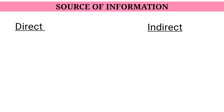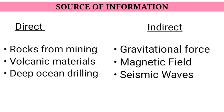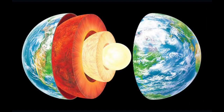Direct sources include studying rocks from mining, studying volcanic materials, and deep ocean drilling, which give us some information. Indirect sources include gravitational force, magnetic field, and seismic waves. Most of the information with regard to the interior of the Earth comes from the study of seismic waves. Now let us study the different layers in brief.